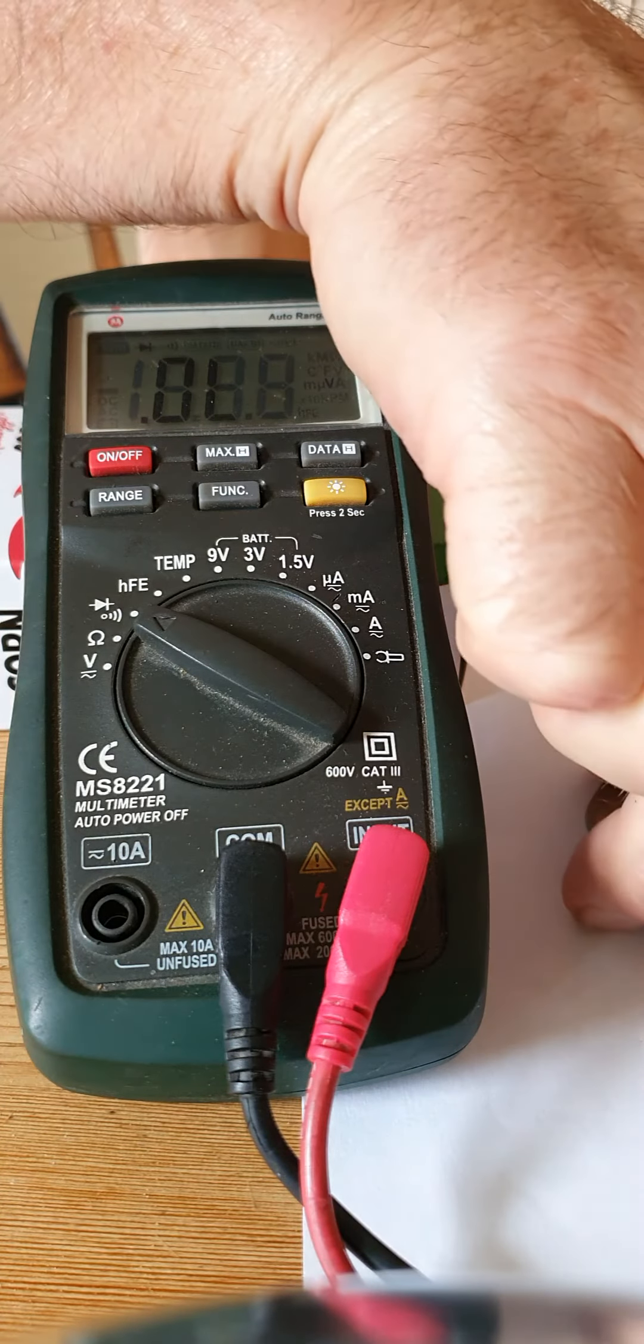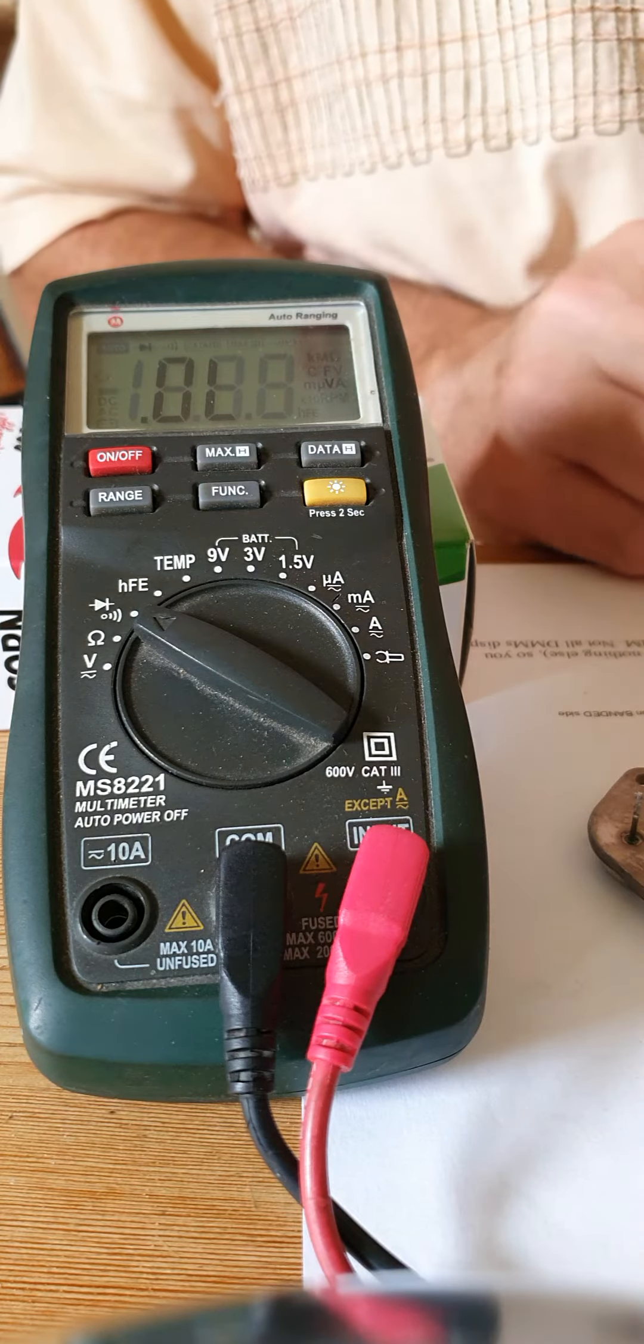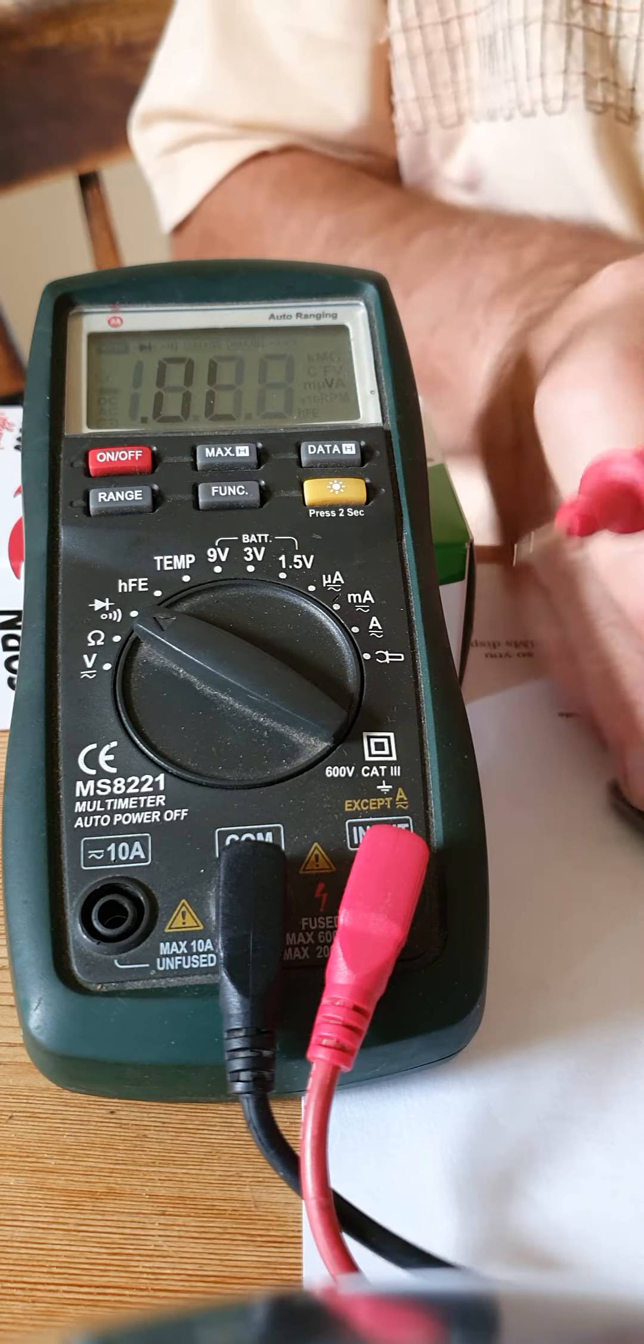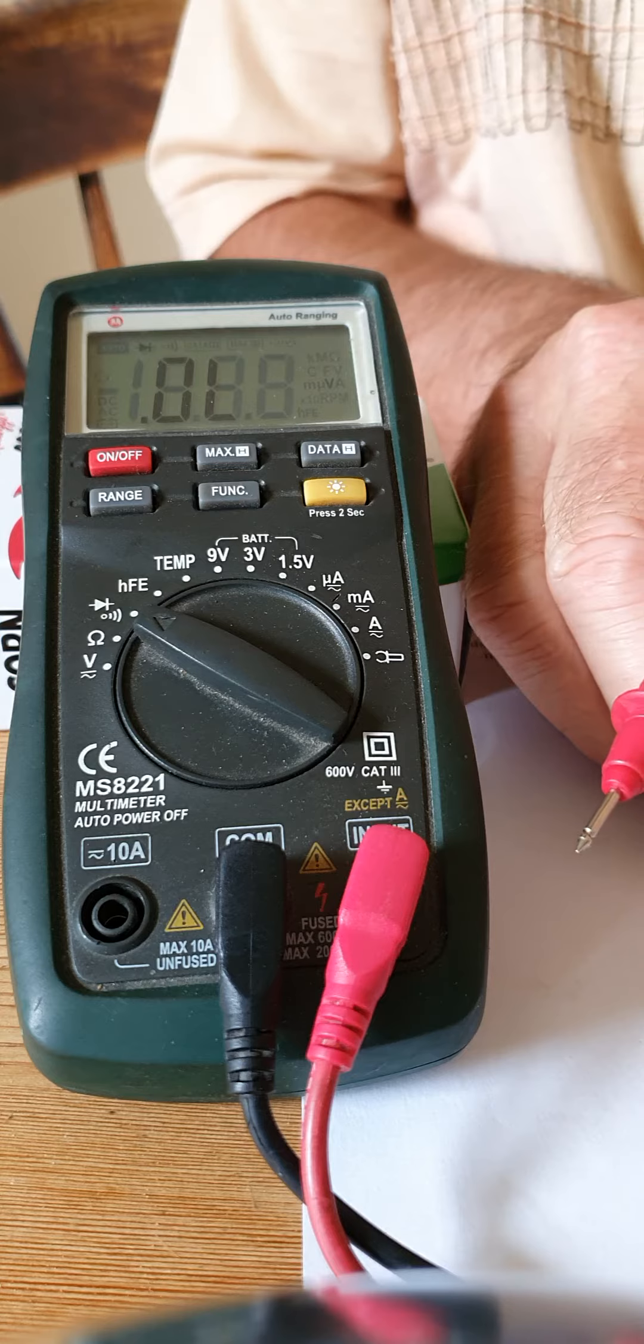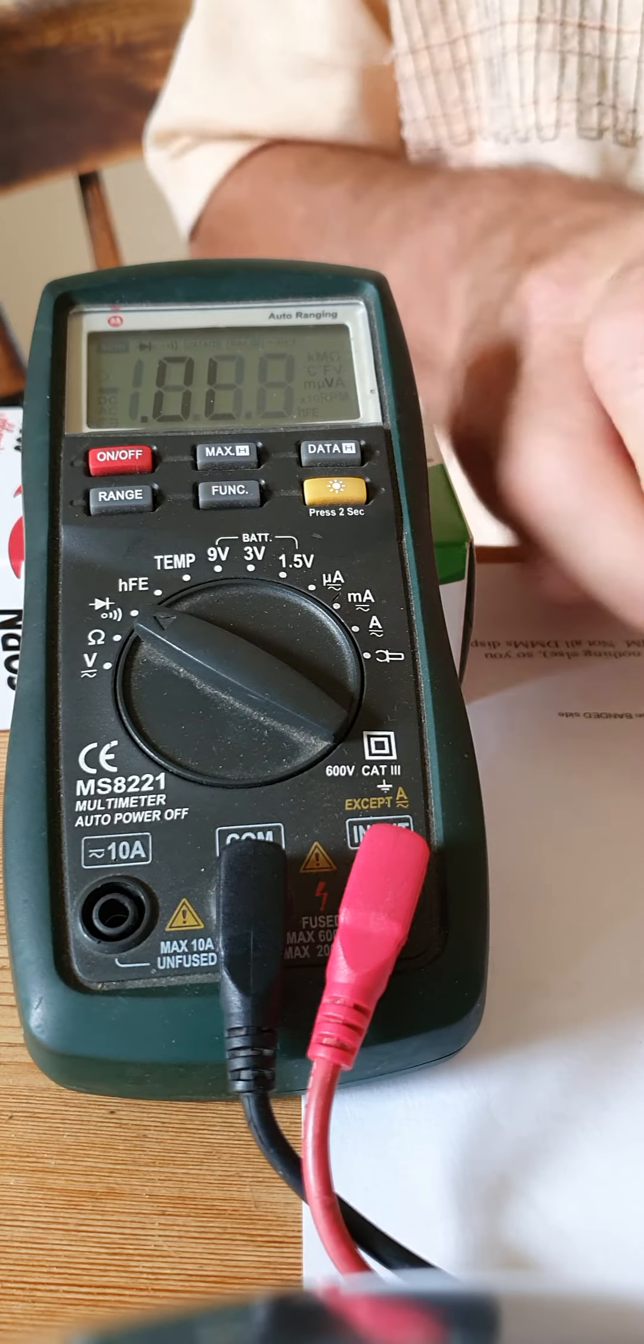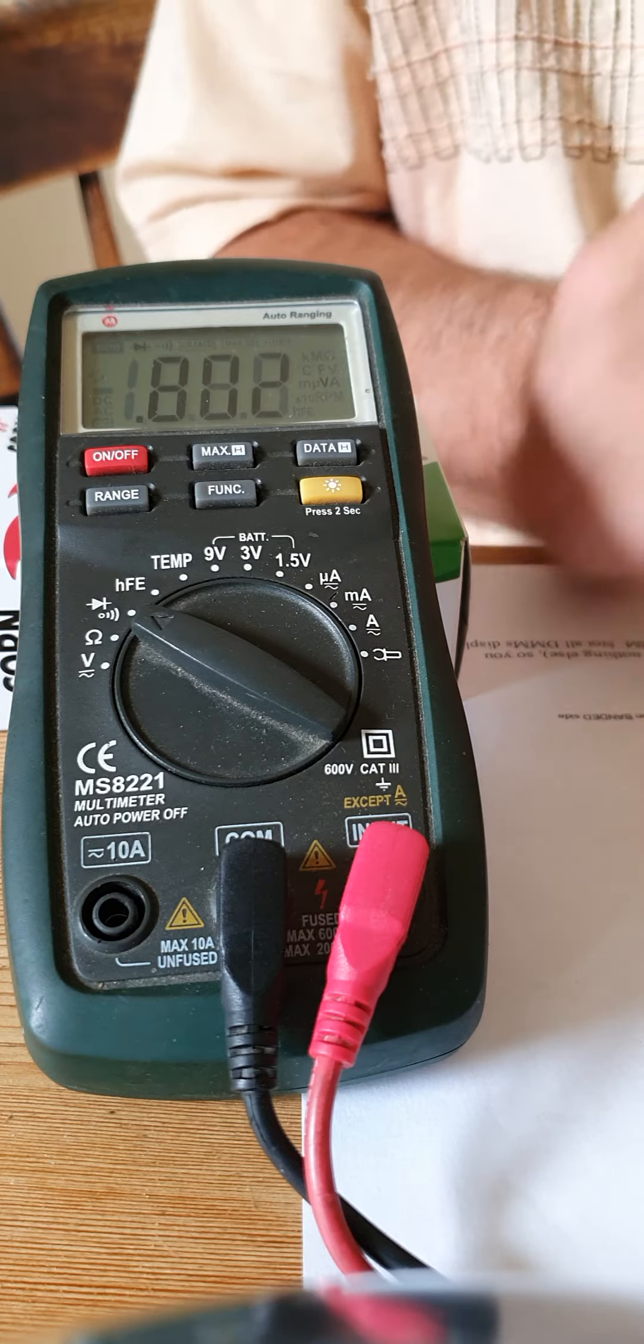Then when I test the old one which came off the machine, red tip on E, black on B: 0.5. Red tip on C, black on B: 0.5.